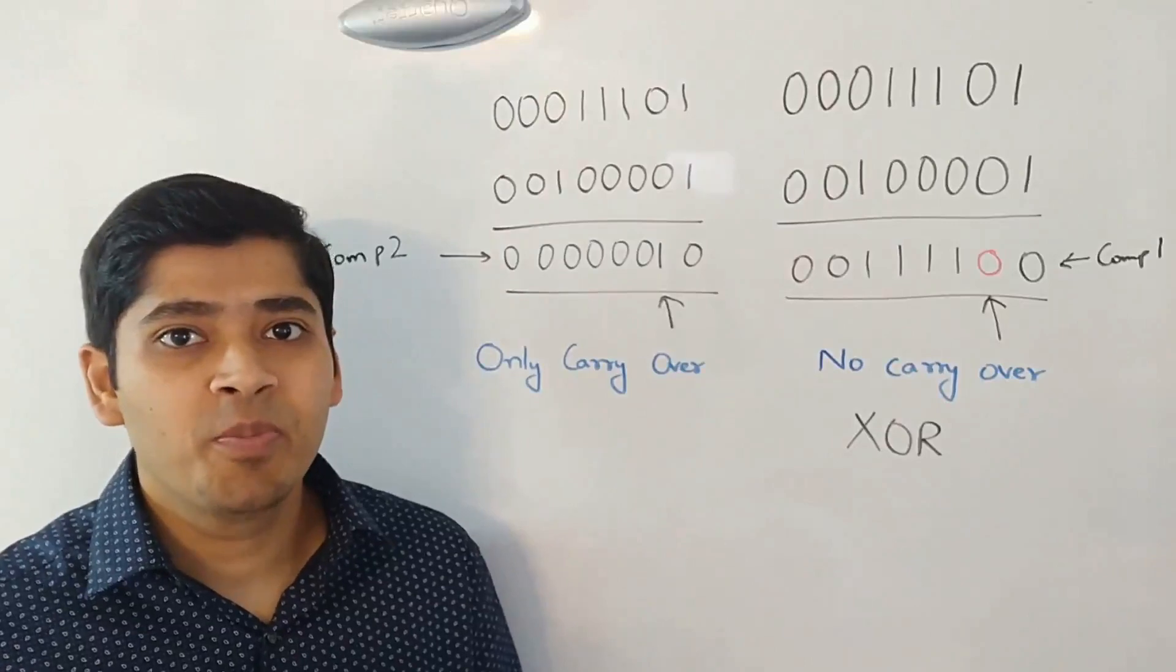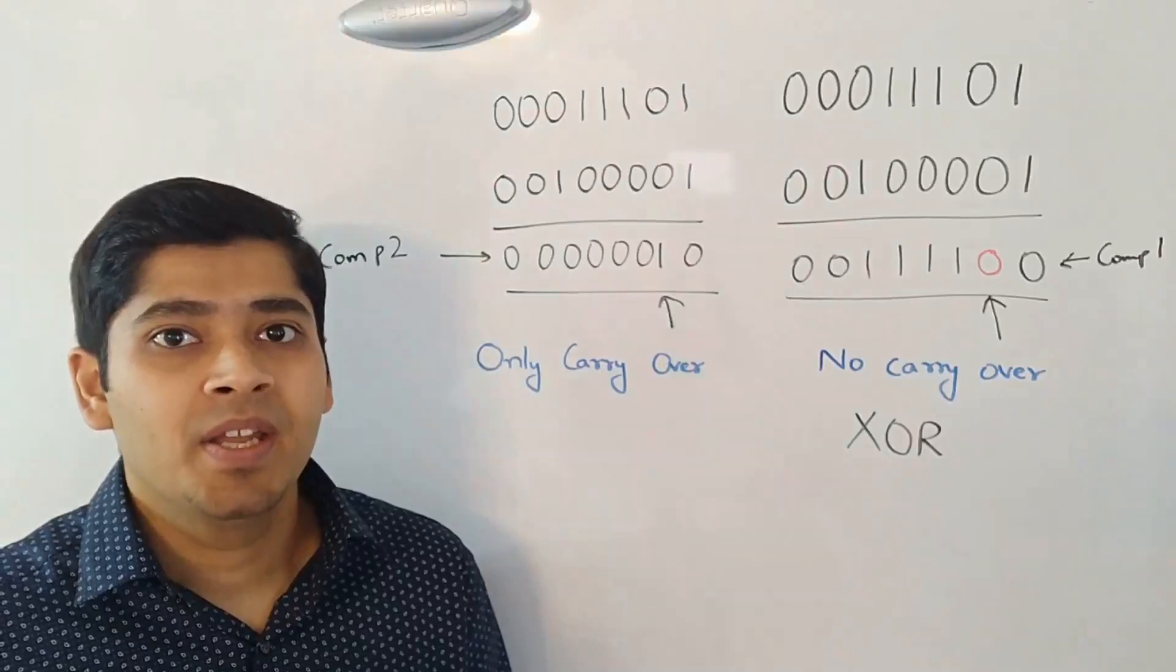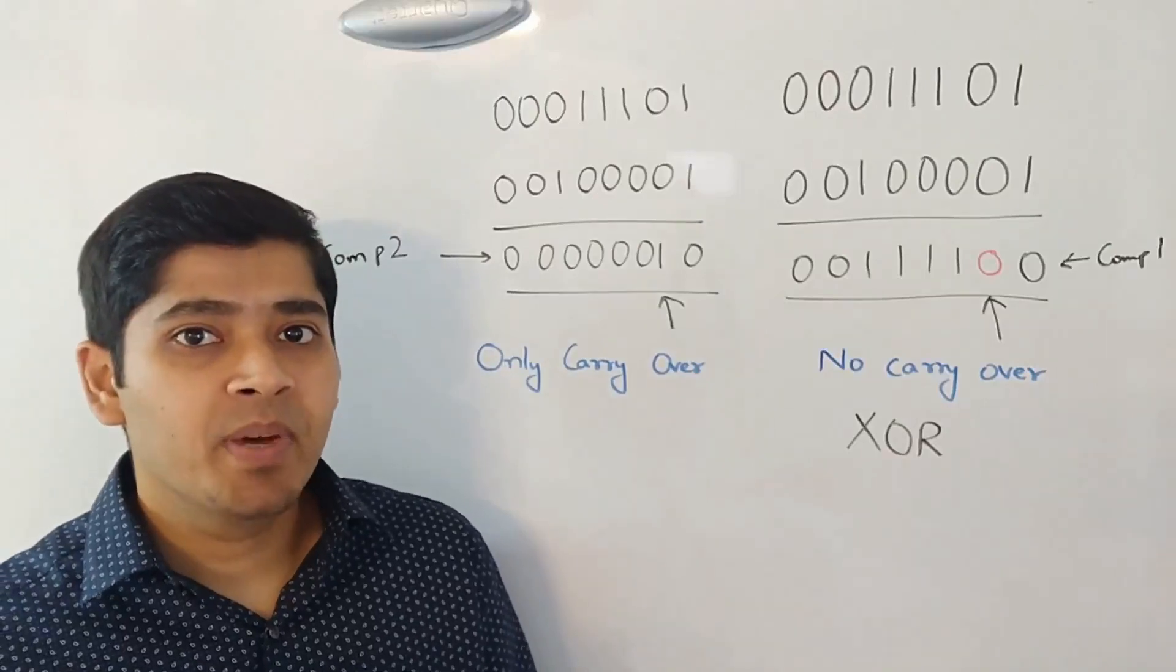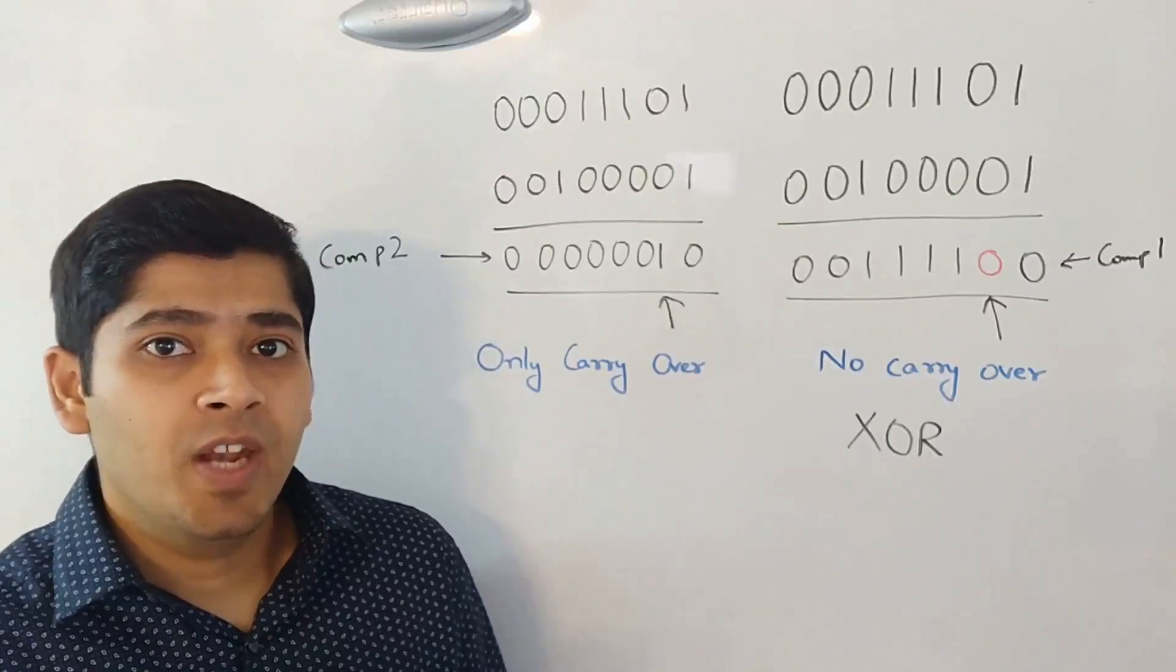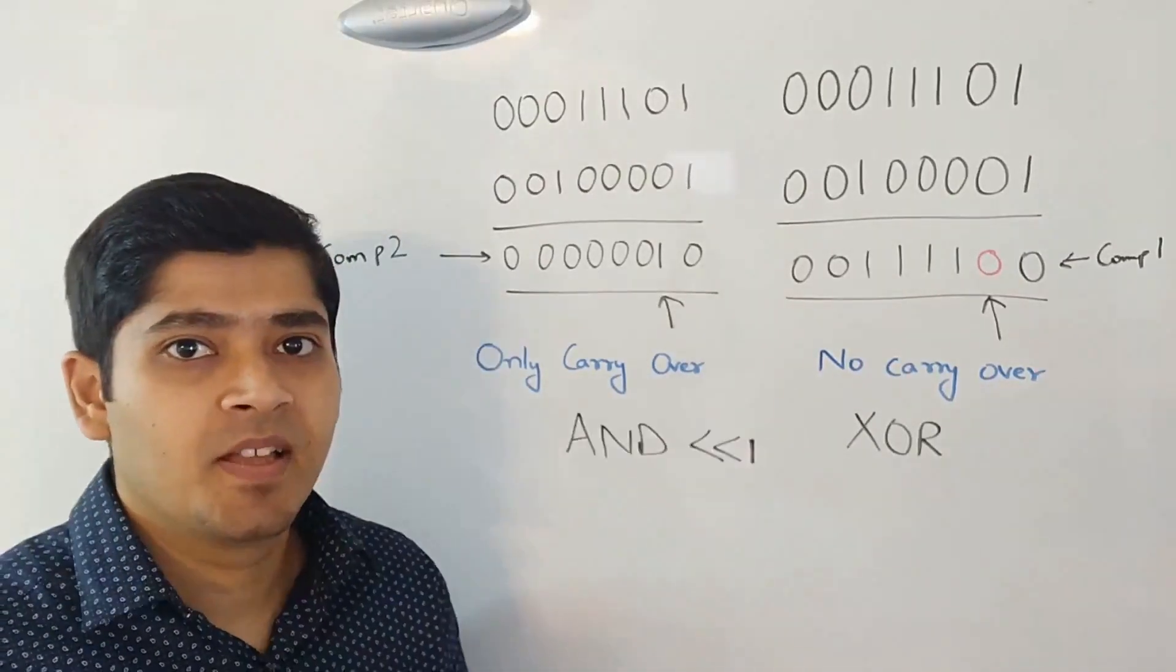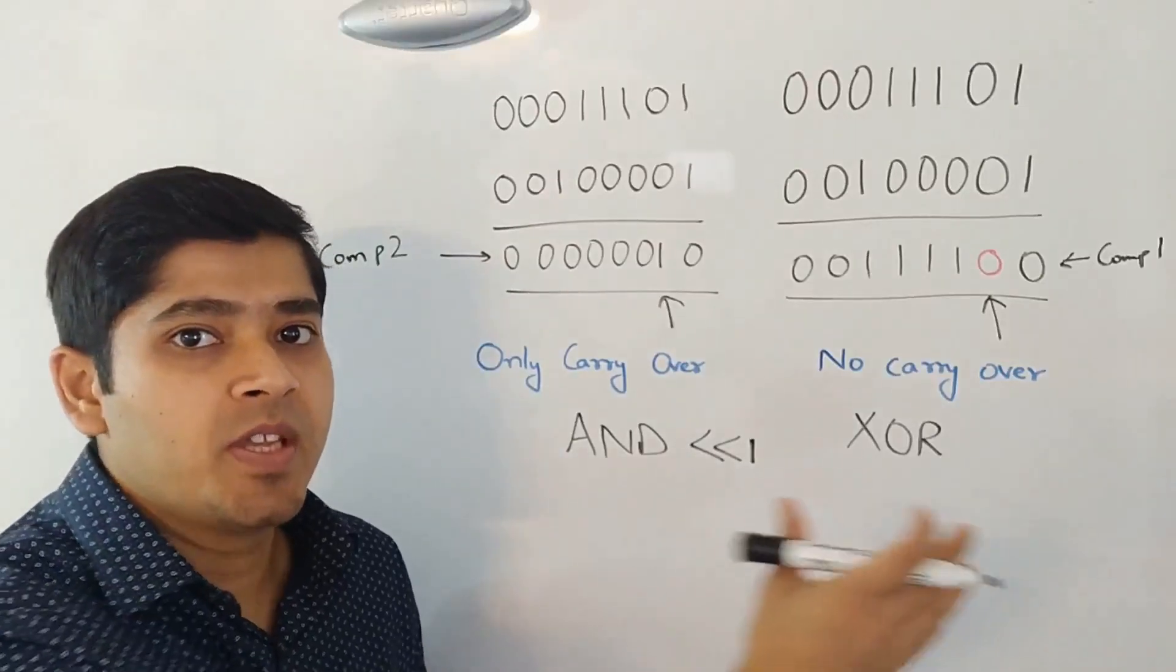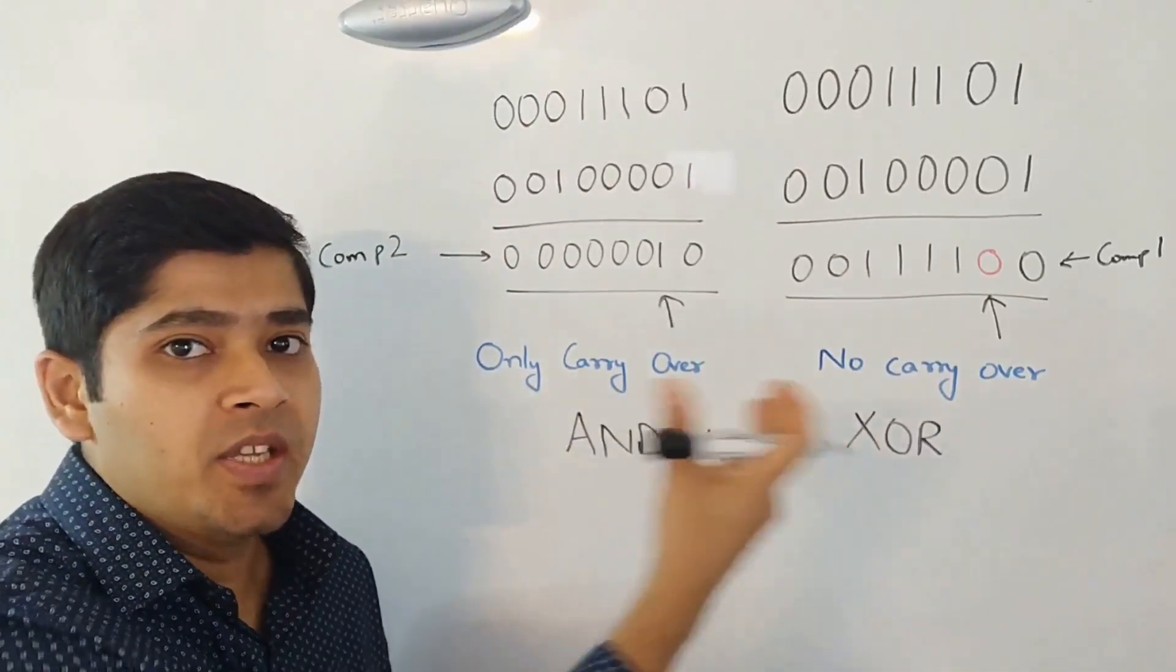In order to compute the result set for only carry over, the first thing that comes to mind is an AND operation. However, you have to realize that it's not just a simple AND operation, it's actually an AND operation and then you will have to left shift all the digits by one. You can take a moment to pause and understand how these two result sets are computed using XOR and AND left shifted by one to get these components.